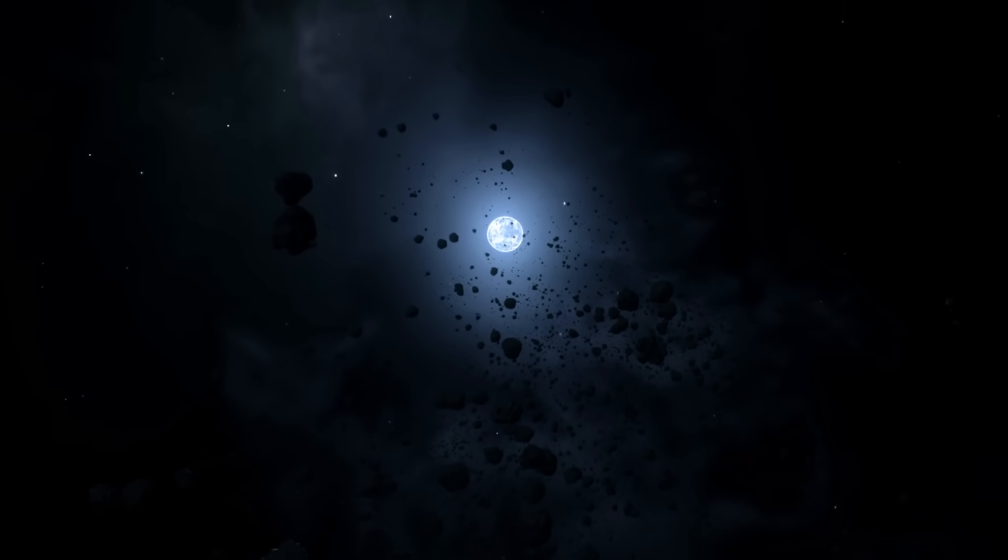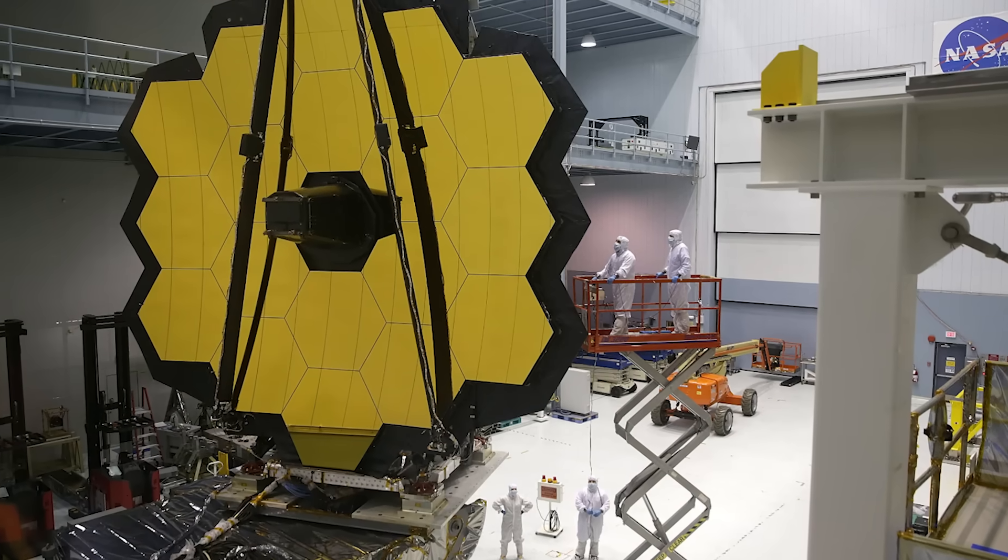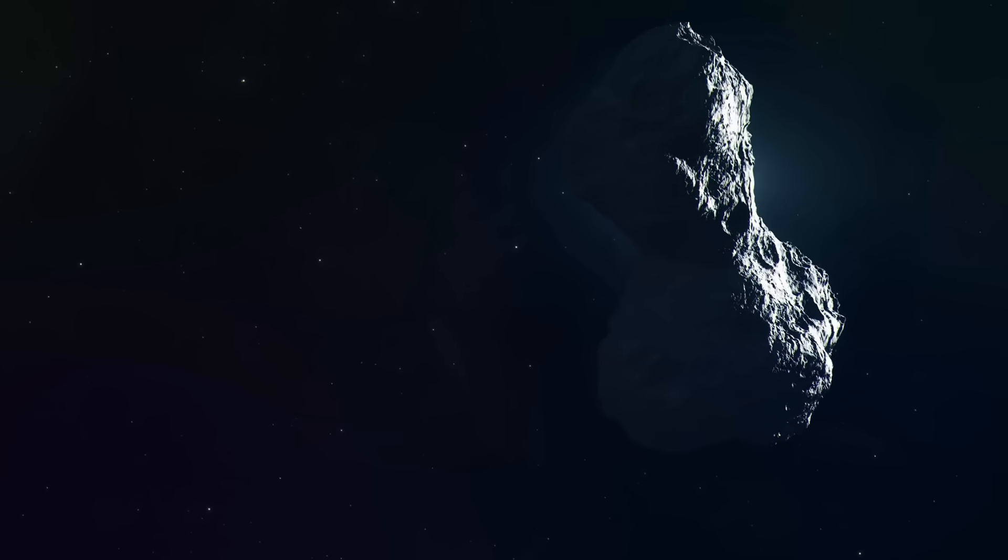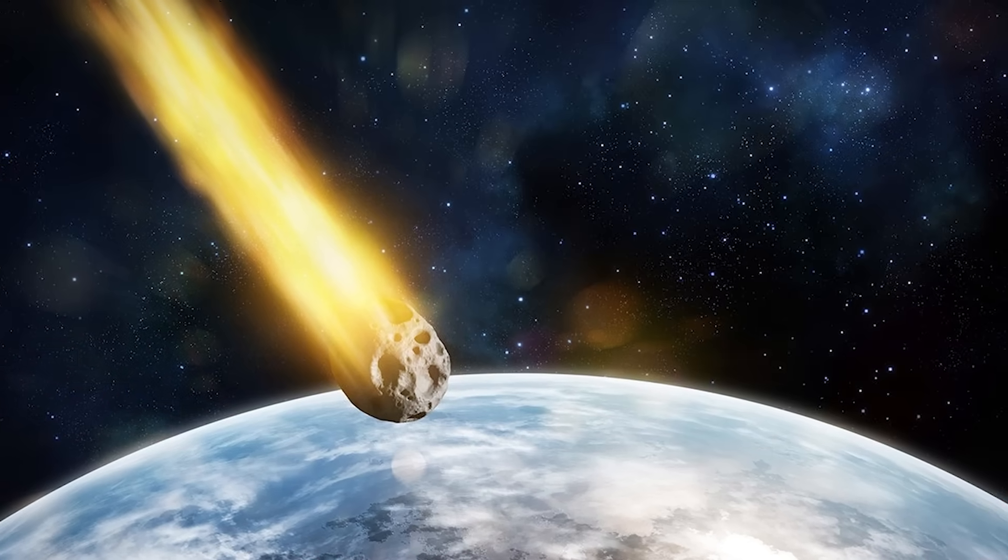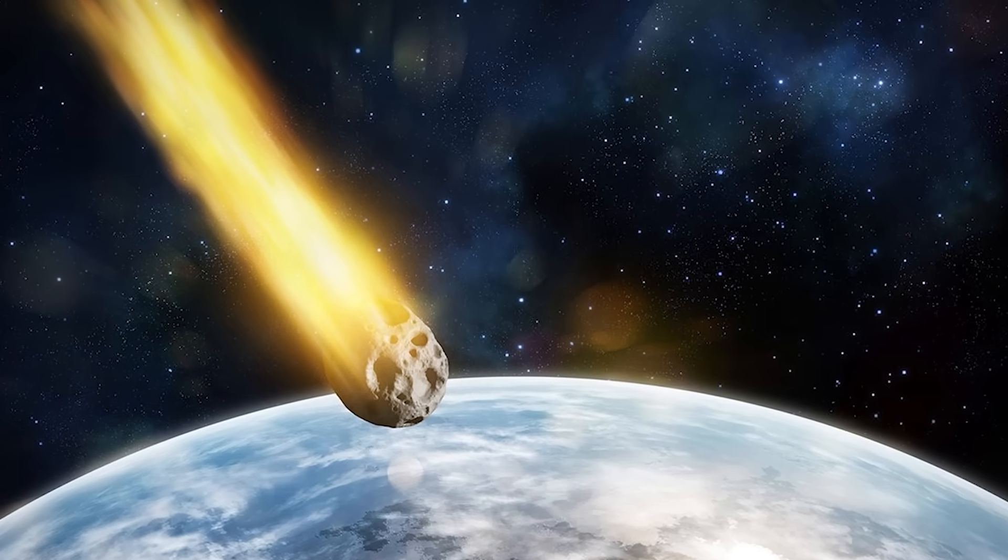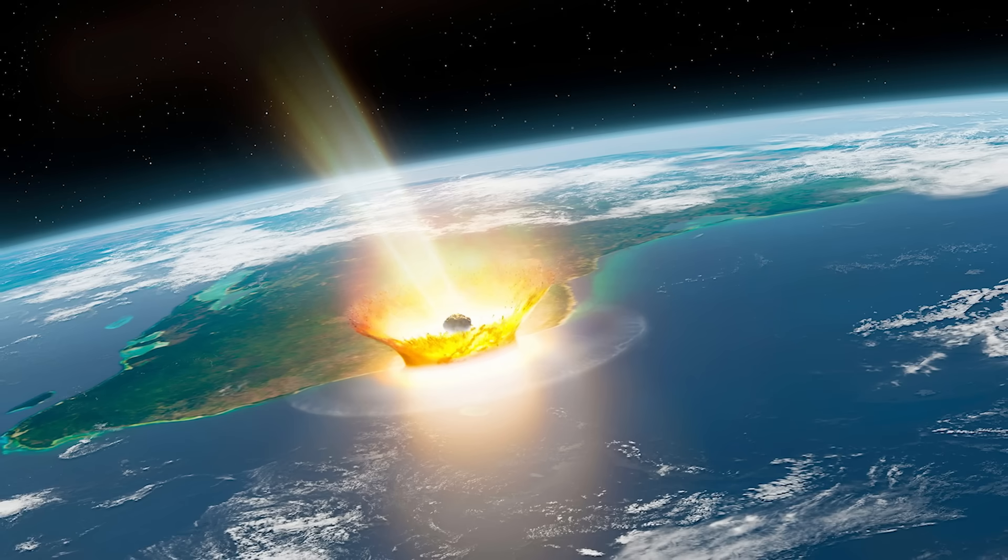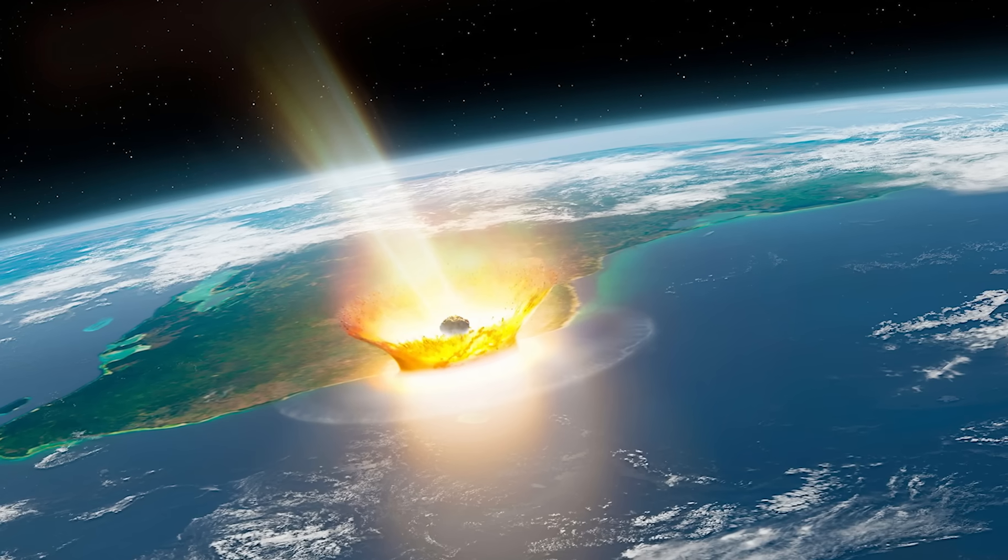NASA is using the James Webb to study asteroid 2024 YR4, which has a small chance of hitting Earth in 2032. Right now, the odds are about 2.3%, which is a jump from 1.3% just a few weeks ago. The numbers will keep changing as more data comes in, but fortunately, the most likely outcome is a near miss. If the asteroid does strike, though, the potential impact zone would stretch across parts of the eastern Pacific Ocean,